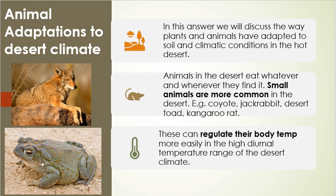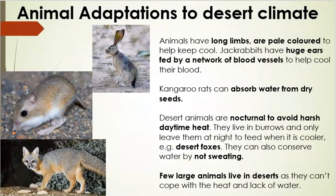Common animals in the desert include the coyote, the jack rabbit, the desert toad, and the kangaroo rat. Most desert animals are quite familiar to us in some way, but they've changed and adapted to survive in the hot climate.